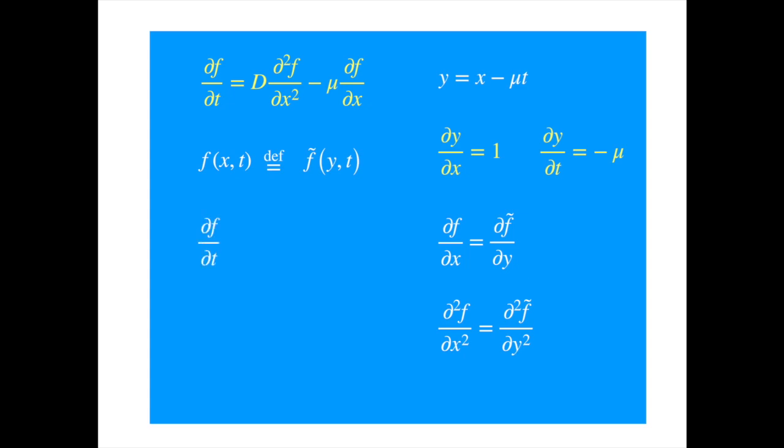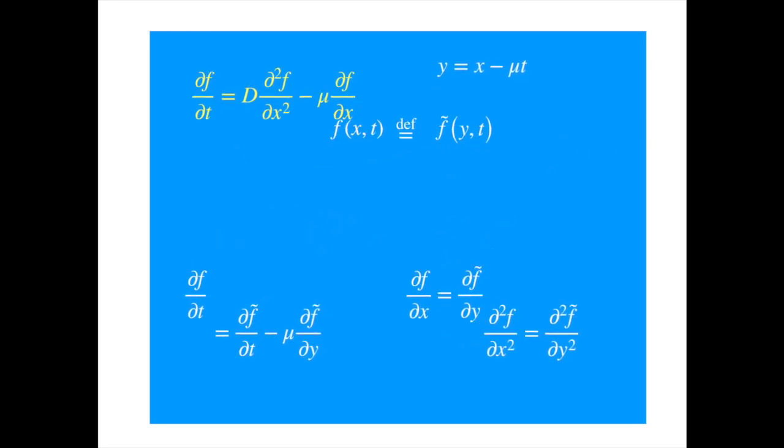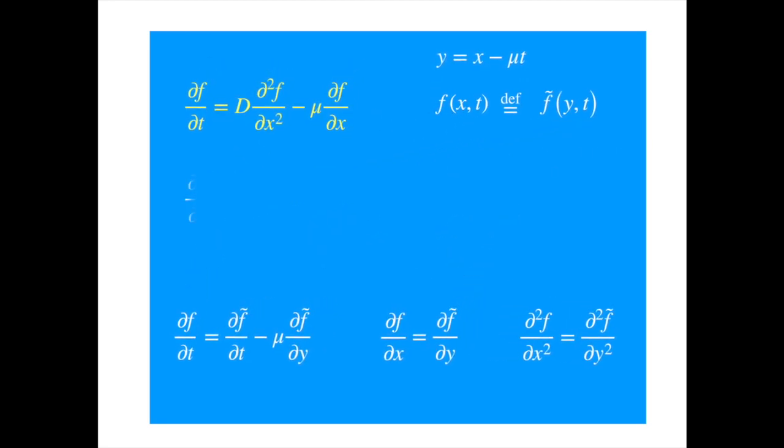Now we calculate the derivative with respect to t, which is slightly tricky because f is a function of y and t, but y is a function of t as well. So when t changes, it will have a direct impact on f and an indirect impact through y. So we use the total derivative. Substituting minus μ for the derivative of y with respect to t, we get. Now we can substitute the derivatives into the differential equation.